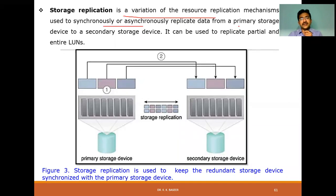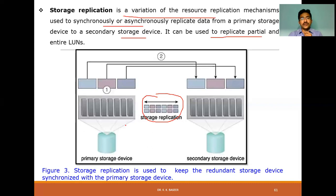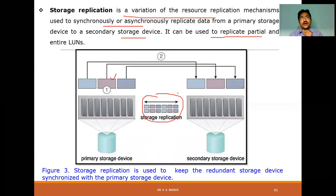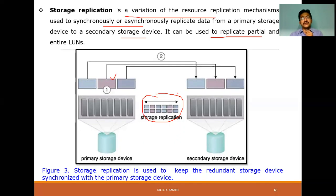Storage replication is a variation of the resource replication mechanism used to synchronously or asynchronously replicate data from primary storage to secondary storage. It can replicate partial or entire LUNs. The replication can be synchronous — time-based — or asynchronous — random. Storage replication is used to keep the redundant storage device synchronized with the primary storage device.